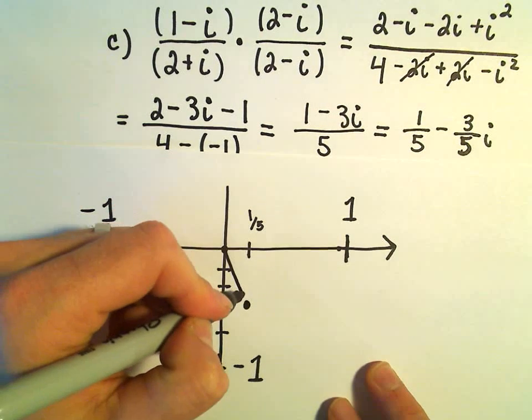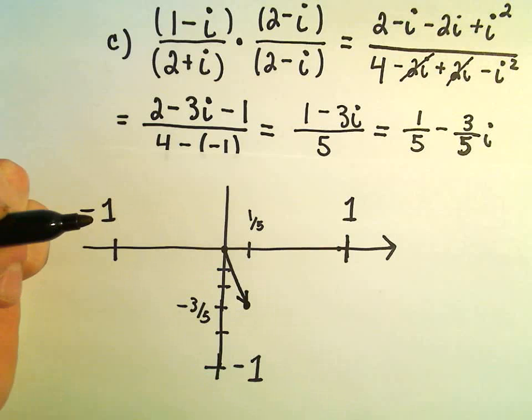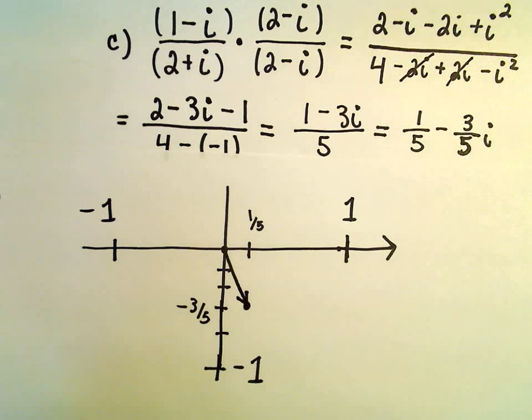Again, we can just make a vector pointing at that little dot, and that would now be the graph of our complex number.